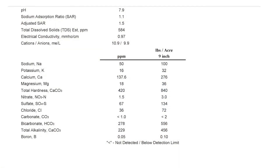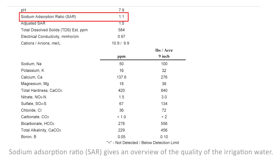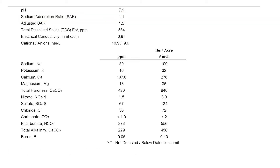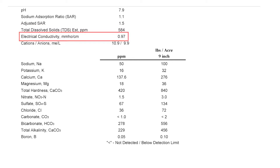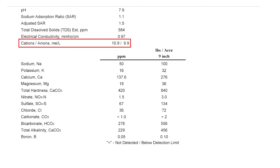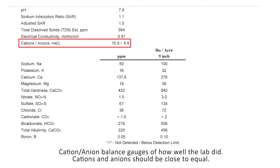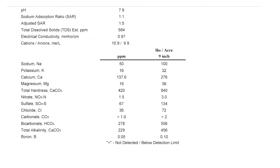Starting at the top of the page, we'll go over some basic information like pH and then calculate an SAR, or sodium absorption ratio. That gives us a good barometer on the quality of our irrigation water. We make an estimation of TDS, or total dissolved solids, and electrical conductivity, and we give a cation and anion balance — that's our gauge of how well the lab work did, since all the pluses should equal the minuses on the charges of the different elements in the test.